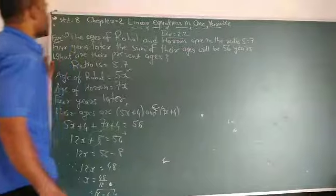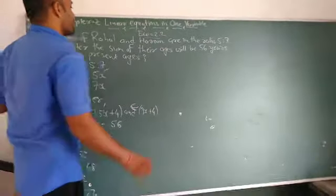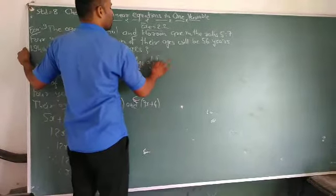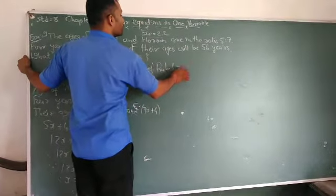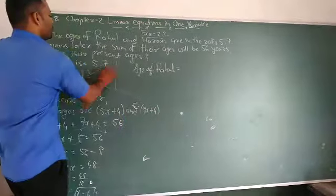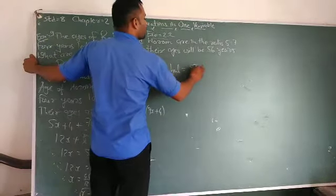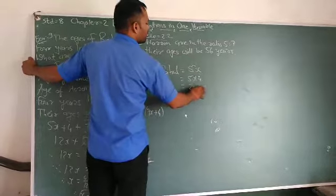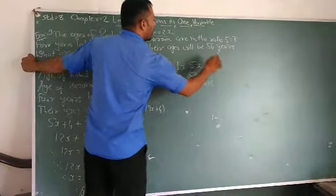Now the question is, what are the present ages? Age of Rahul is equal to 5x. 5 multiplied by x, which is 4, equals 20 years.